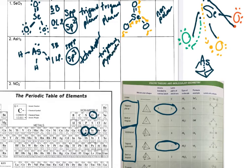For the wedge and dash diagram, I have arsenic on top, two hydrogens coming forward as wedges, and one hydrogen going backwards as a dash. If you imagine looking down on it, you'd have arsenic closest to you and the three hydrogens below making a triangle.